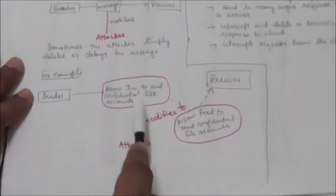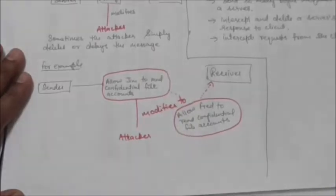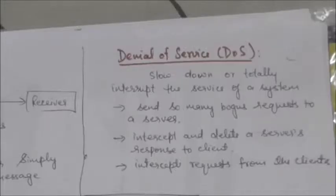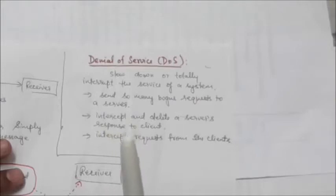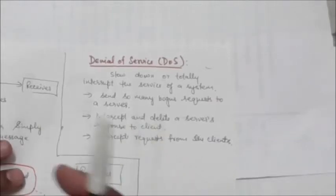The next is denial of service. It is a very common attack. It may slow down or totally interrupt the service of a system. The attacker can use several strategies to achieve this. The attacker might send so many bogus requests to a server that the server crashes because of the heavy load.